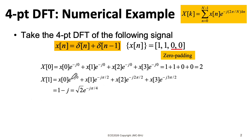So let's think about X[1]. Capital N is four. So if I put a four here, I wind up with a pi over two. So I have e to the minus j pi over two, e to the minus j two pi over two, and e to the minus j three pi over two. But these two data points are zero, so these go away.